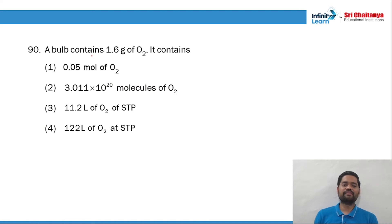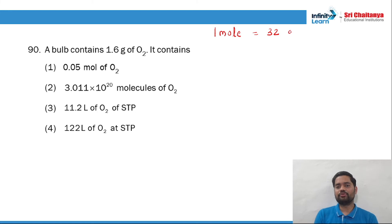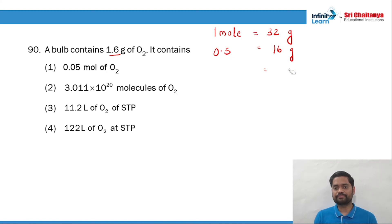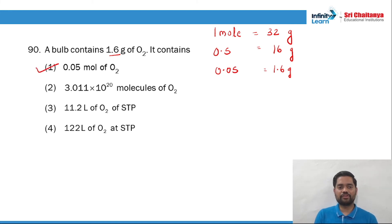Question 90: a bulb contains 1.6 grams of oxygen. 1 mol of O2 = 32 grams, so 0.05 mol = 1.6 grams. Dividing by 10: 16/10 = 1.6 grams corresponds to 0.05 mol. The right answer is 0.05 mol.